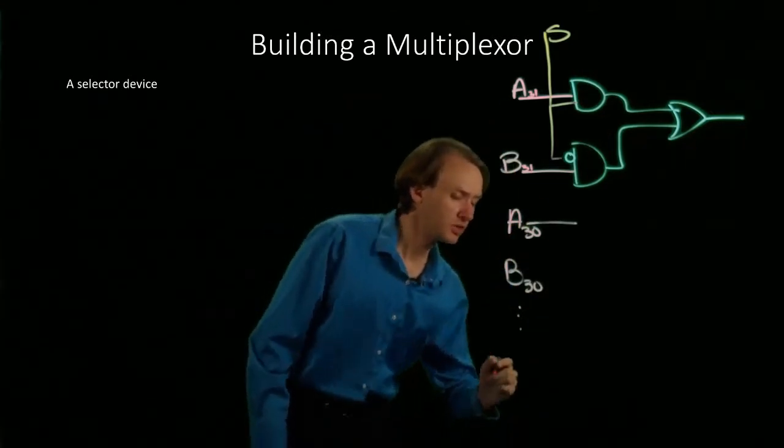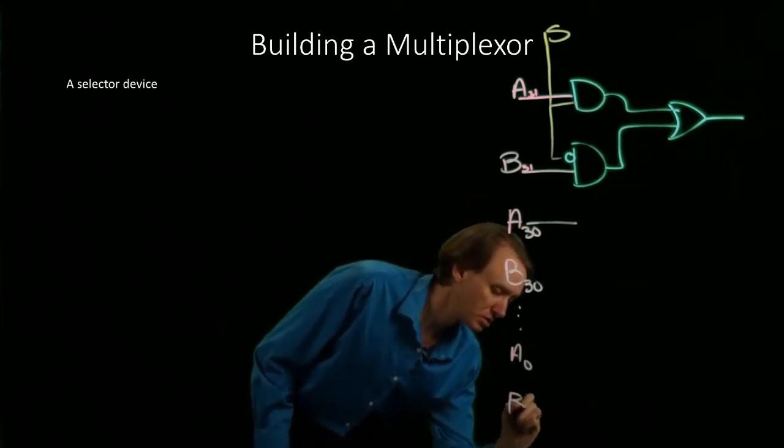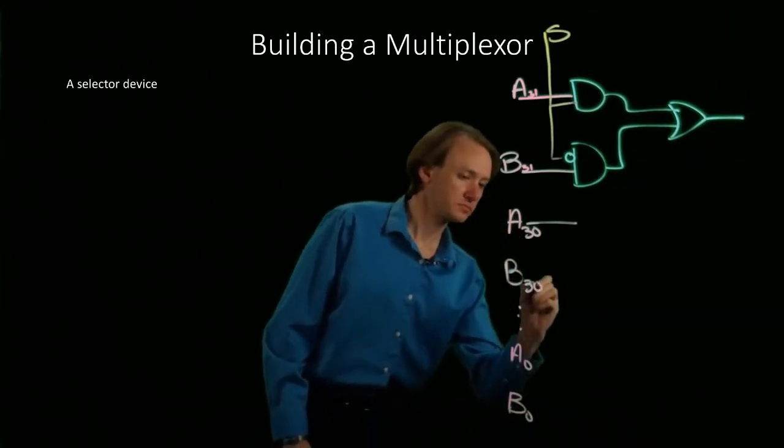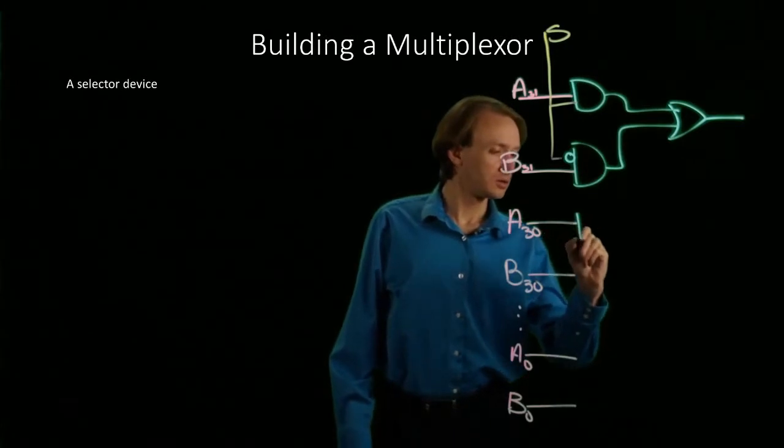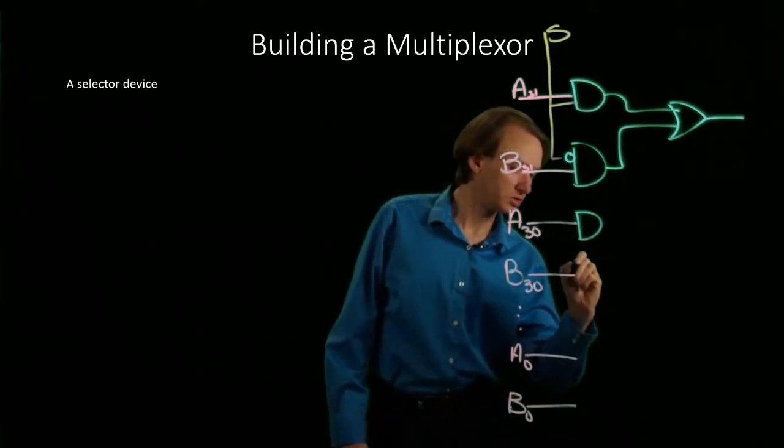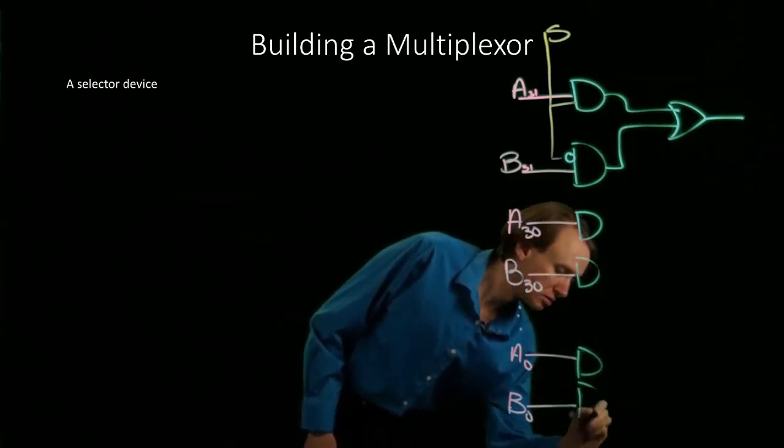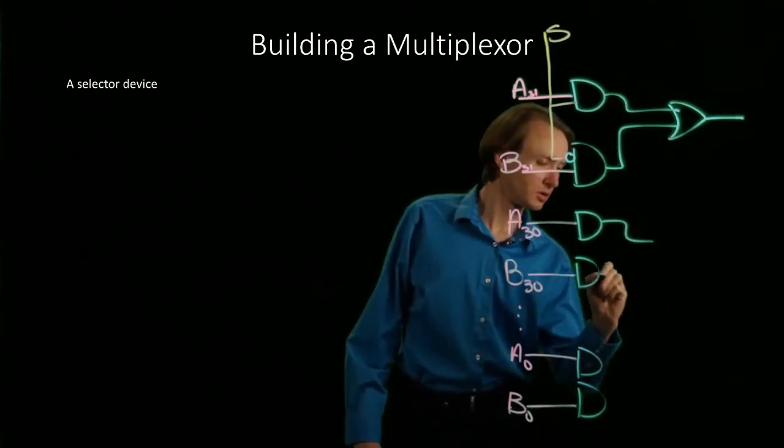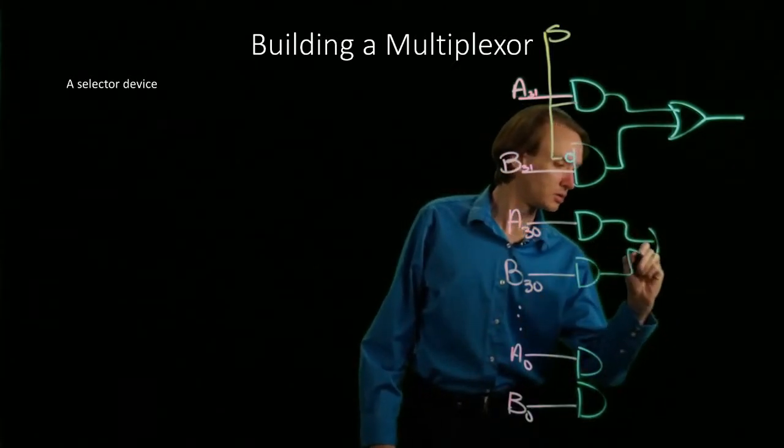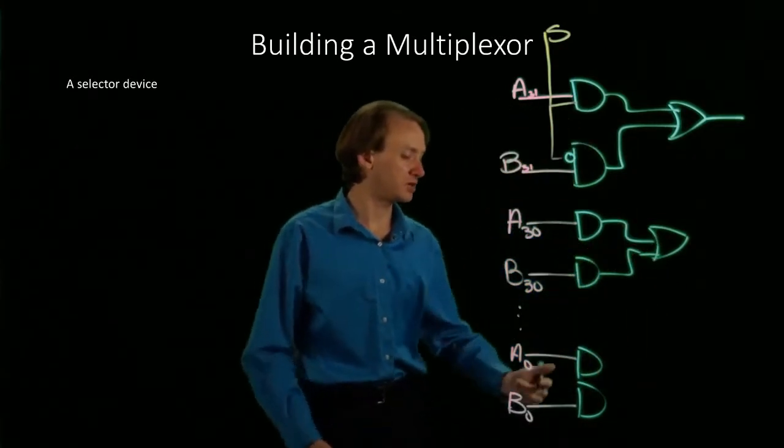In this case, I'll have 32 of them, so down at the bottom, I will have A0 and B0. And these will again go into a pair of AND gates. Those AND gates will get fed into OR gates.